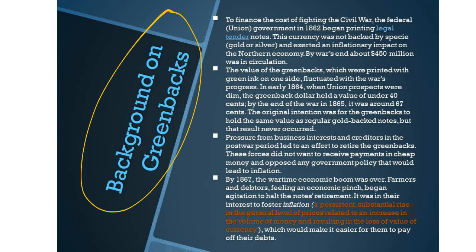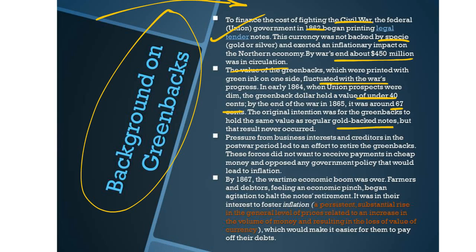To finance the cost of fighting the Civil War, the federal government — the Union — began printing legal tender notes in 1862. This currency was not backed by gold or silver, which was called specie, and exerted an inflationary impact on the northern economy. By the war's end, about $450 million of paper money was in circulation. The value of the greenbacks, printed with green ink on one side, fluctuated with the war's progress. In 1864, when union prospects were dimmed, the greenback dollar held a value of under 40 cents; by the end of the war in 1865, it was around 67 cents. The original intention was for the greenbacks to hold the same value as regular gold-backed notes, but that never happened.